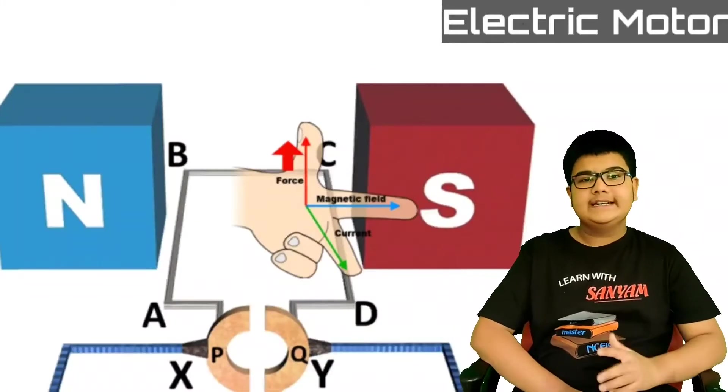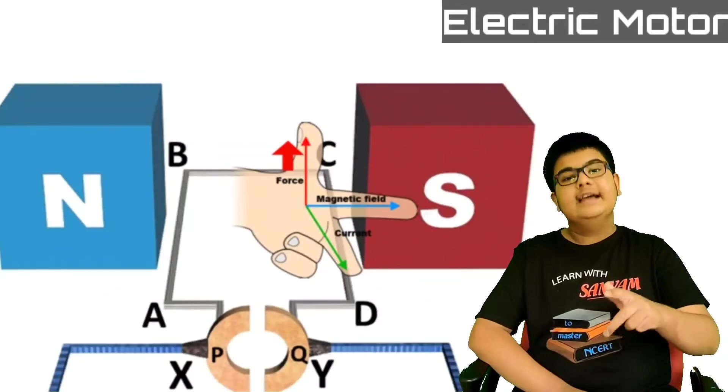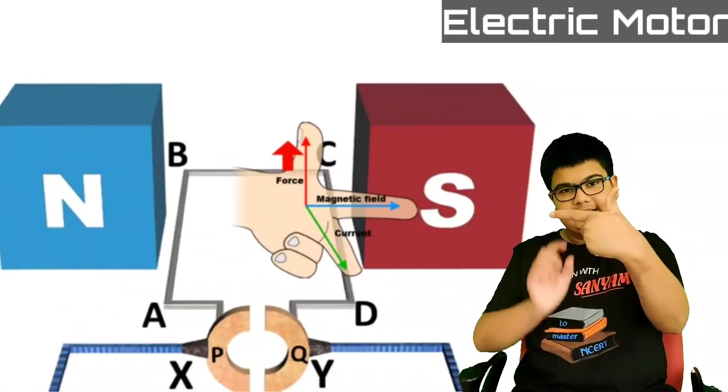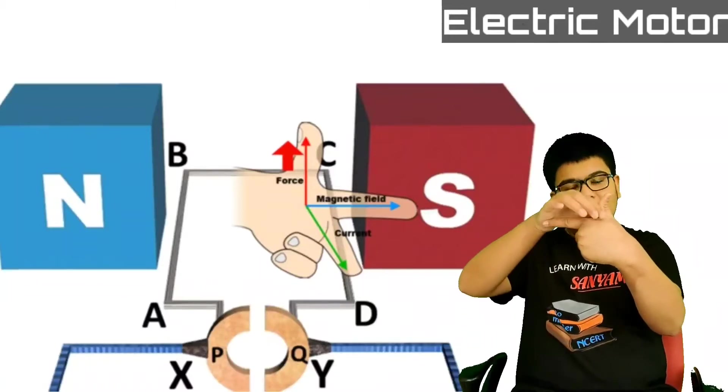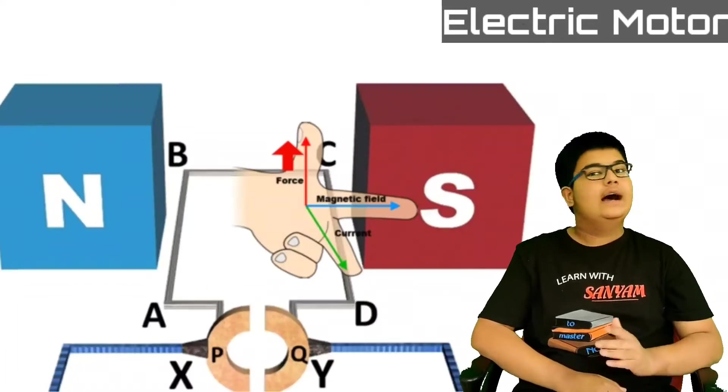While on arm CD, we apply the Fleming's rule. We get that current is acting in this direction. The magnetic field is acting in this direction. So the force is acting in the upward direction. On arm CD, force acts upwards.